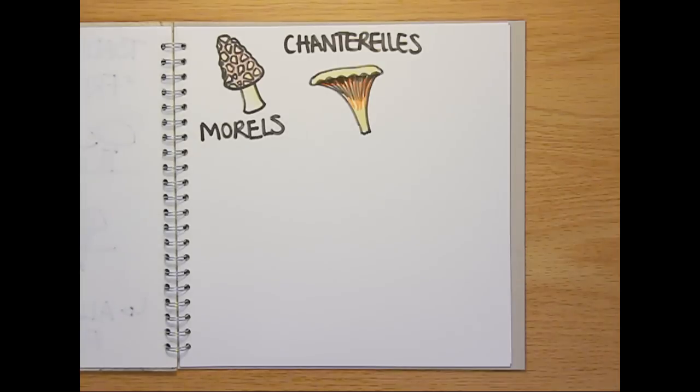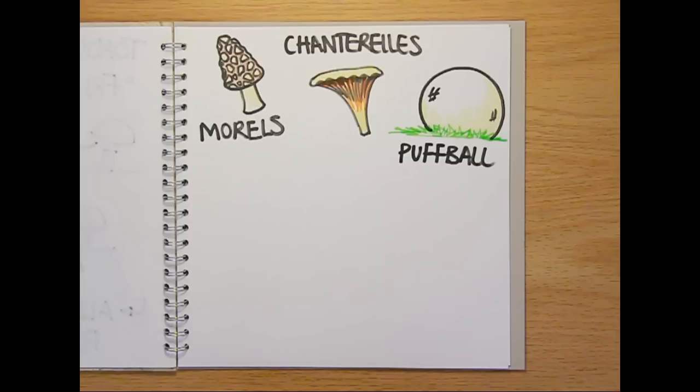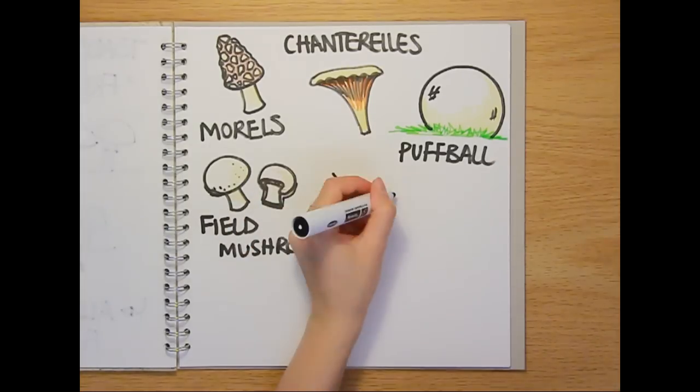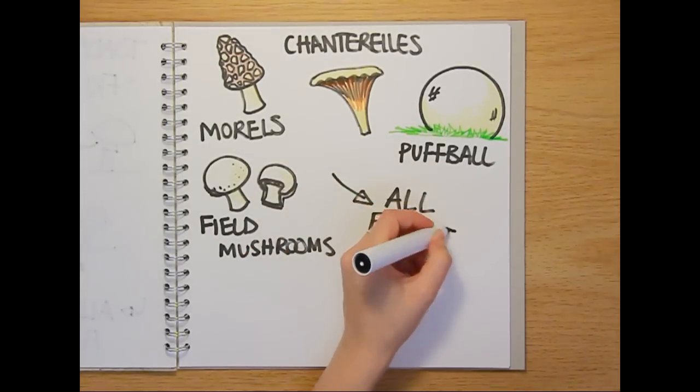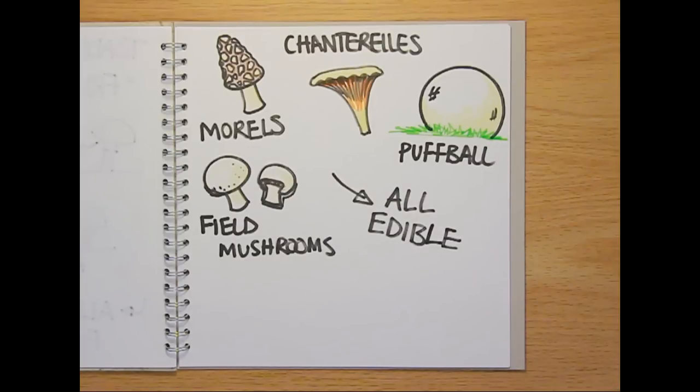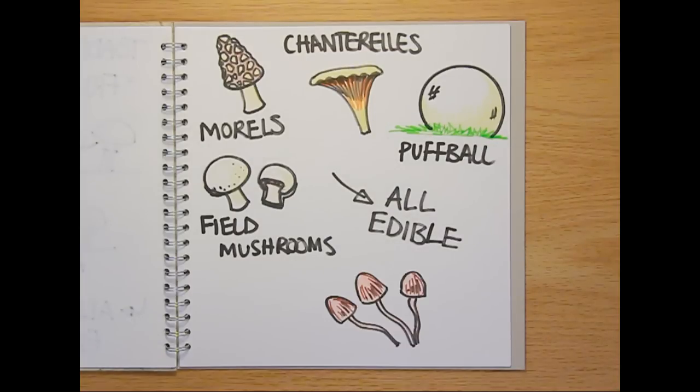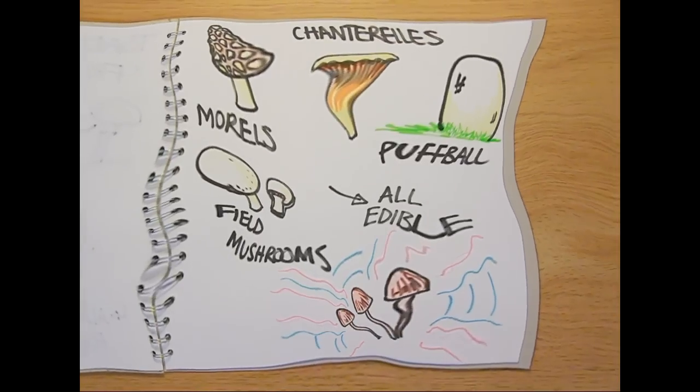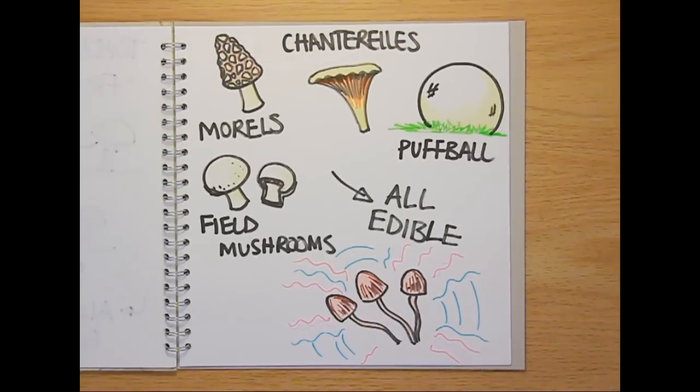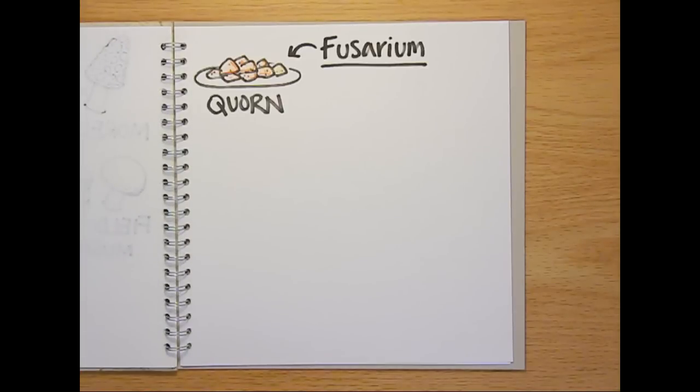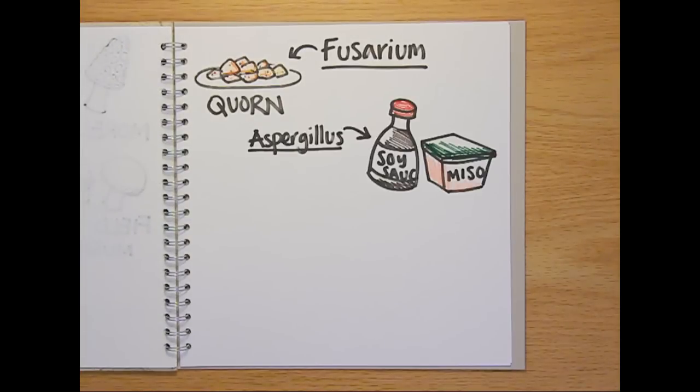And of course, some of these toadstools are also edible. Species like morels, chanterelles and giant puffballs, as well as the cultivated field mushrooms you buy in the supermarket, all make excellent additions to the dinner table. And though I wouldn't advise eating some species because of the psychedelic effects they may have, fungi are an important part of food and drink production in other ways too. Quorn is made from the Fusarium fungus, and a form of Aspergillus mold is essential for soy sauce and miso production in Japan.